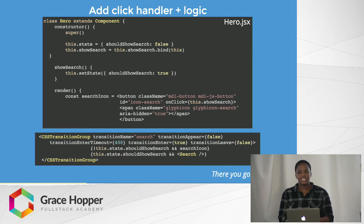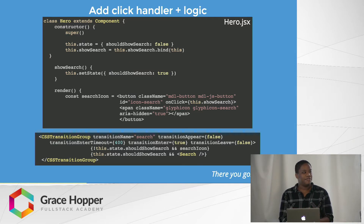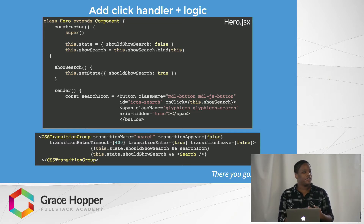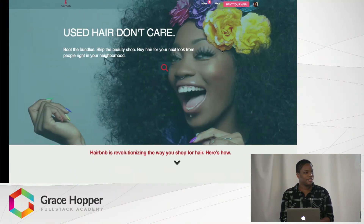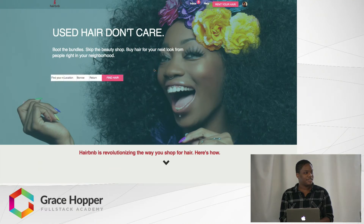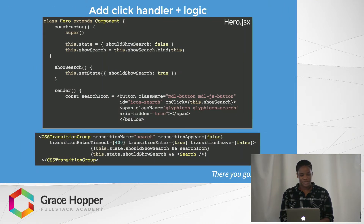Then we're just going to add some logic to activate the click handler. So I have something in my state that's either true or false. That will basically tell React whether or not to render the search component. And at the bottom, I'm rendering the search component based on the condition of whether should-show-search in our state is true. And that's about it. So let's see what that looks like. And there it is. So that wasn't too hard.